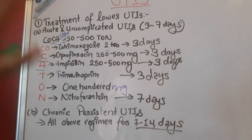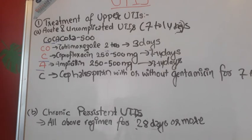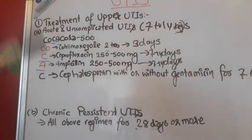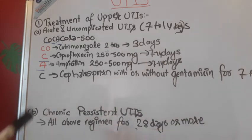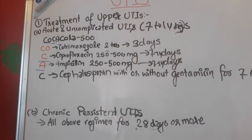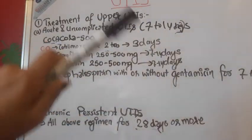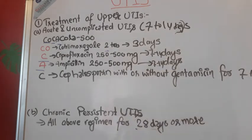Now for the treatment of upper urinary tract infections — this is even easier. Upper UTIs include pyelonephritis, intrarenal abscess, and perinephric abscess. They are again categorized as acute/uncomplicated and chronic/persistent. Acute and uncomplicated upper UTIs are treated for seven to fourteen days, whereas chronic persistent upper UTIs are treated for twenty-eight days or more.